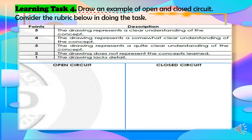So we have the rubric. You will get 5 points if the drawing represents a clear understanding of the concept. And you will get 4 points if your drawing represents a somewhat clear understanding of the concept.